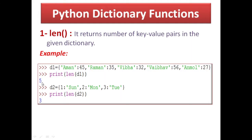So it will return an integer value. यहाँ पर 5 आ गया। इसी तरह से एक दूसरी dictionary है जिसमें 3 elements हैं, 3 key-value pair हैं, so here I am getting the length as 3. So this is about the length function — it calculates the number of key-value pairs, the number of elements in the dictionary.